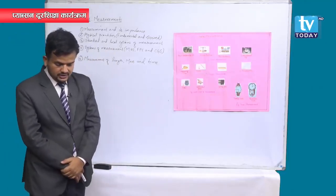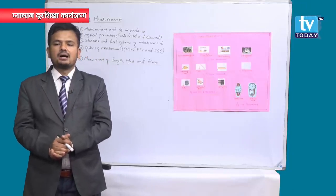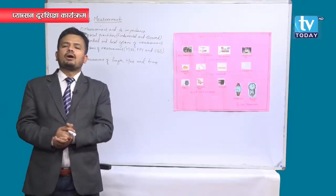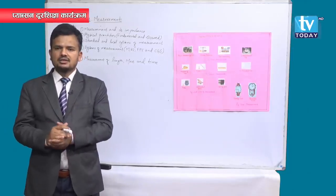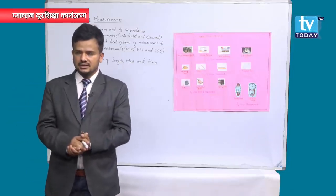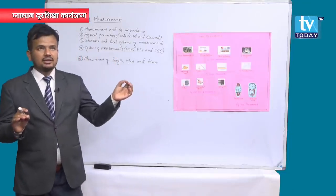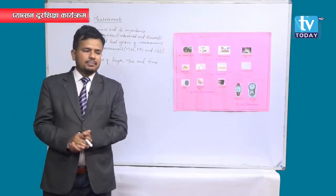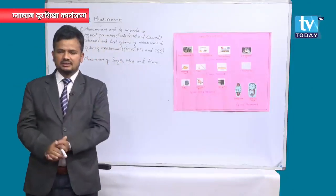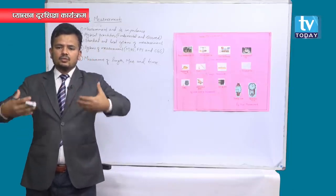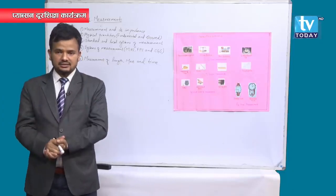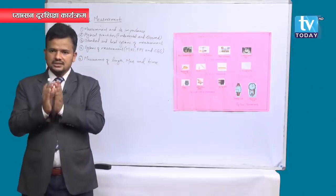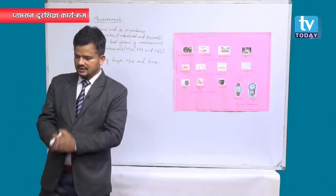The next term is physical quantities. Can you measure all things around us? Not everything can be measured. Some things can be measured while others cannot. For example, you can measure today's temperature using a thermometer. But if I say I am unhappy, can you measure the level of unhappiness, happiness, love, or affection? There is no device to measure such abstract things.